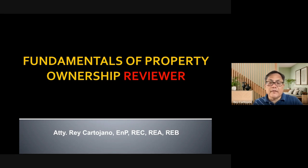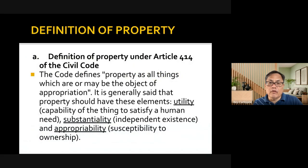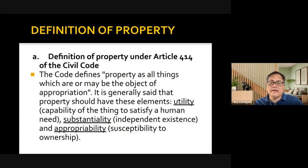Let's quickly go over the definition of property under Article 414 of the Civil Code. Property is defined in the generic sense as all things which are or may be objects of appropriation. Anything that can be the object of appropriation is property. The elements of property are: number one, utility — the capability of the thing to satisfy human need; second, substantiality — independent existence; and third, appropriability — susceptibility to ownership.